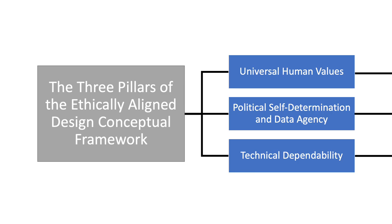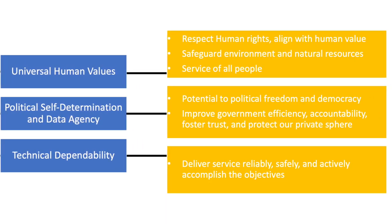The three pillars of the ethically aligned design conceptual framework. First, universal human values, which include respecting human rights, safeguarding the environment and natural resources, and service of all people. Second, political self-determination and data agency, which implies the potential of a well-implemented AIS to facilitate political freedoms and democracy, improve government operations, and protect our privacy. Third, technical dependability, which implies AIS systems should deliver service reliably, safely, and actively accomplish the objectives.